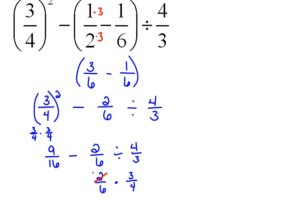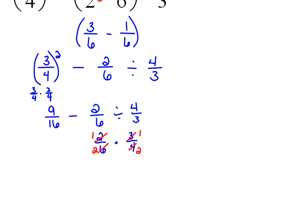2 would go into 2 one time. 2 would go into 4 two times. 3 would go into 3 one time. And 3 would go into 6 two times. So if I were now to multiply those, 1 times 1 is 1, and 2 times 2 is 4.